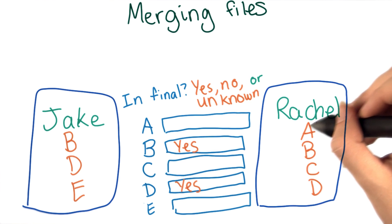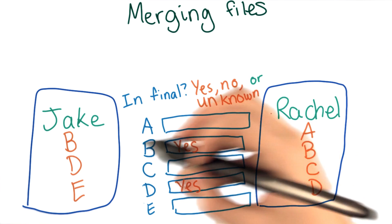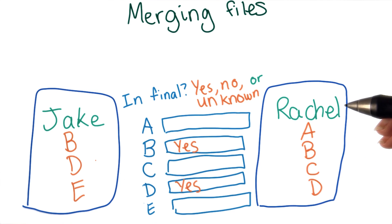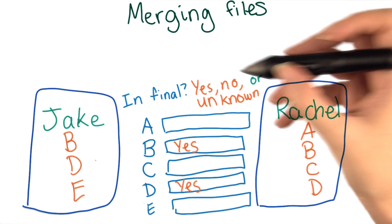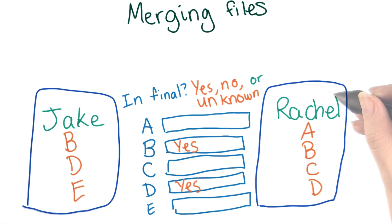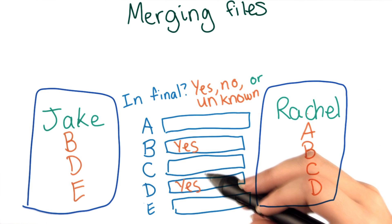Now let's look at some that are different. Rachel's file contains A, but Jake's file doesn't. There are a few different ways that this could have happened. Maybe the original file didn't contain A and Rachel added it. In that case, we do want A in the final version.